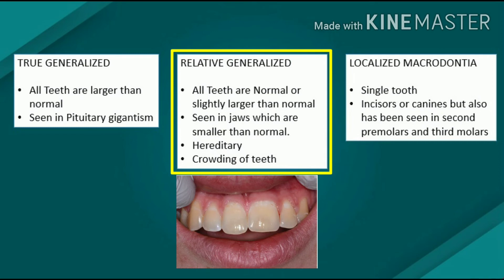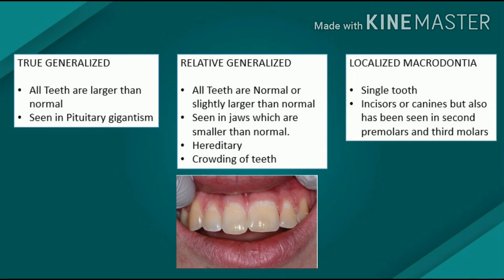As in microdontia, the importance of heredity must be considered. Macrodontia of single teeth is relatively uncommon but is occasionally seen. It is of unknown etiology. The tooth may appear normal in every respect except for its size.